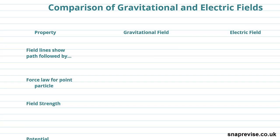So the field lines show the path followed by, or rather the force on, in a gravitational field a free test mass, and in an electric field a free test charge. But the key thing to know for an electric field is that it's a positive test charge. For a gravitational field it's just any free test mass.